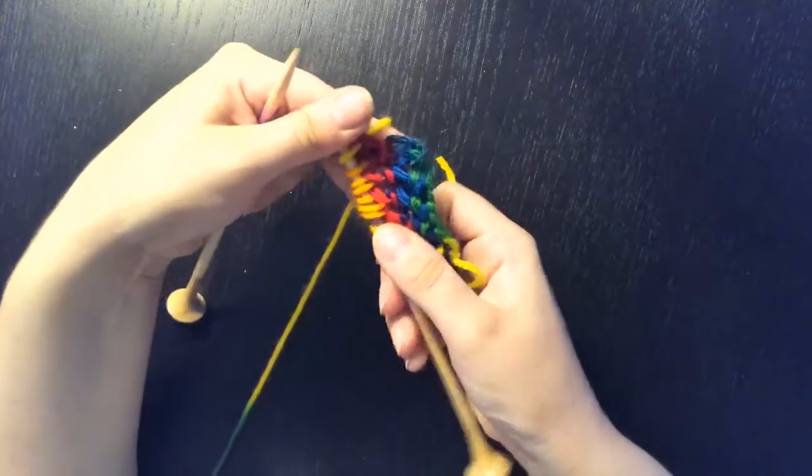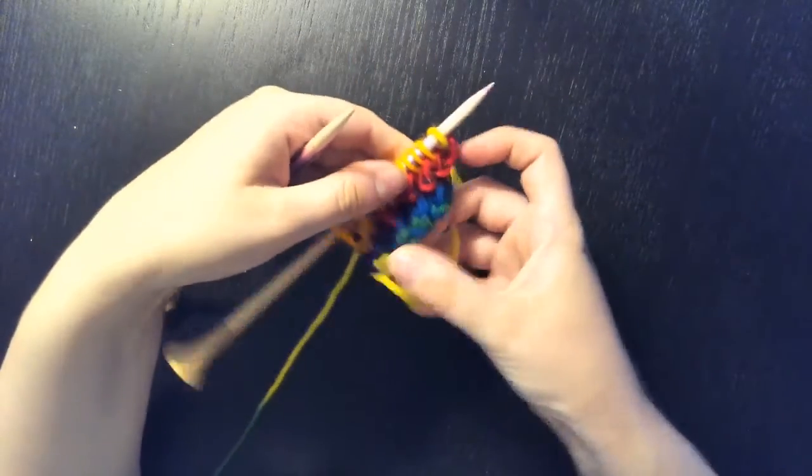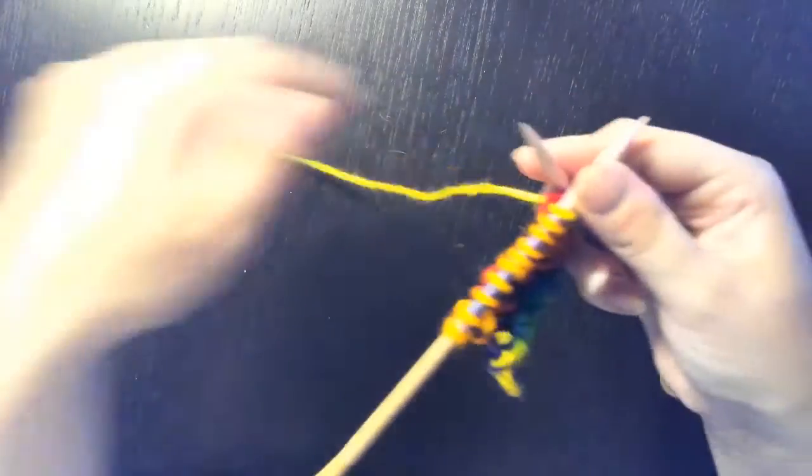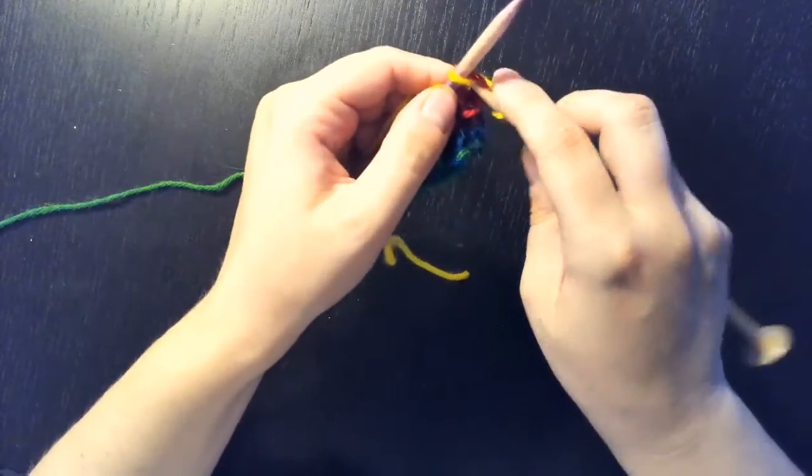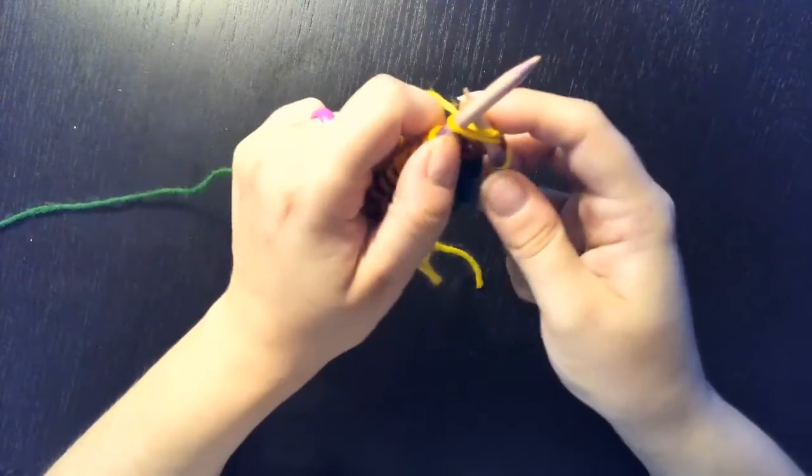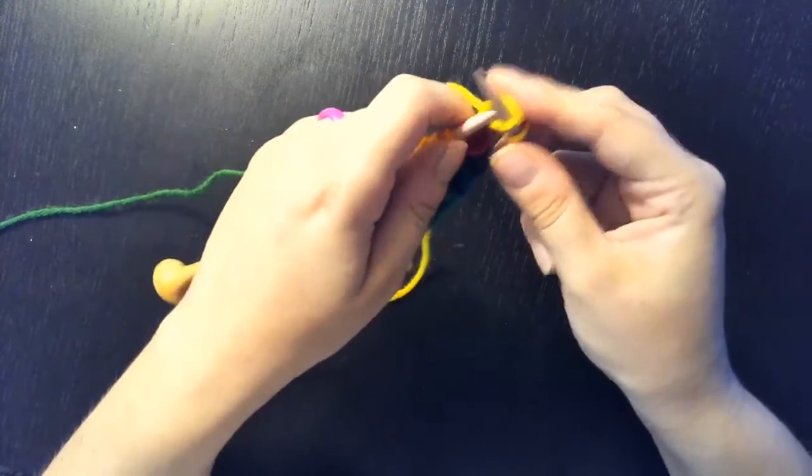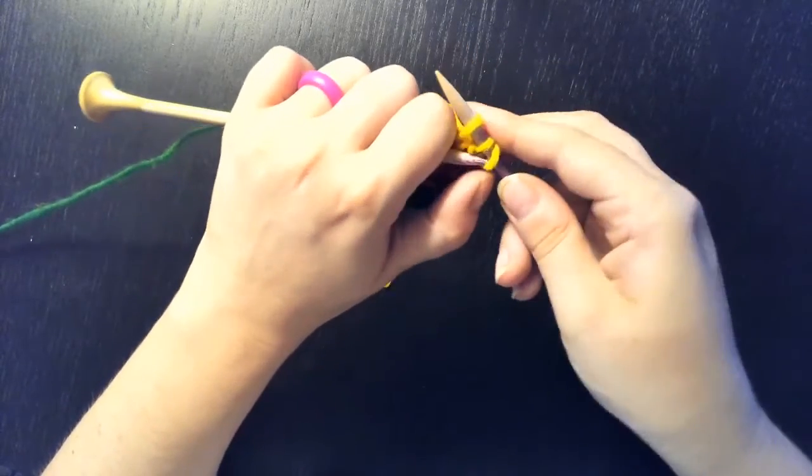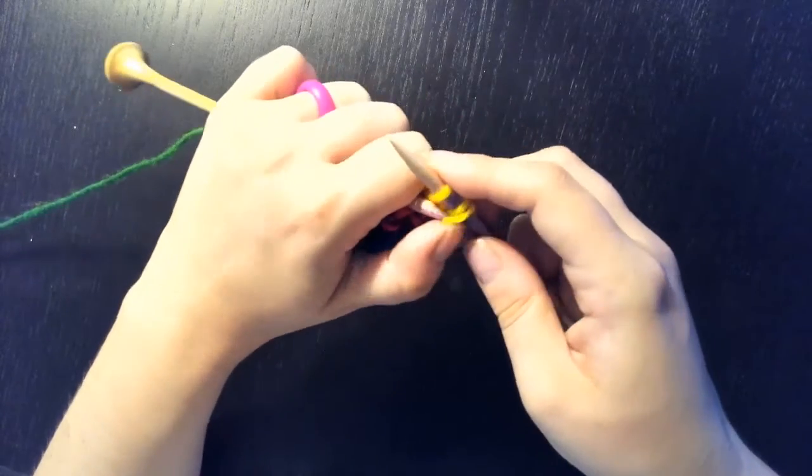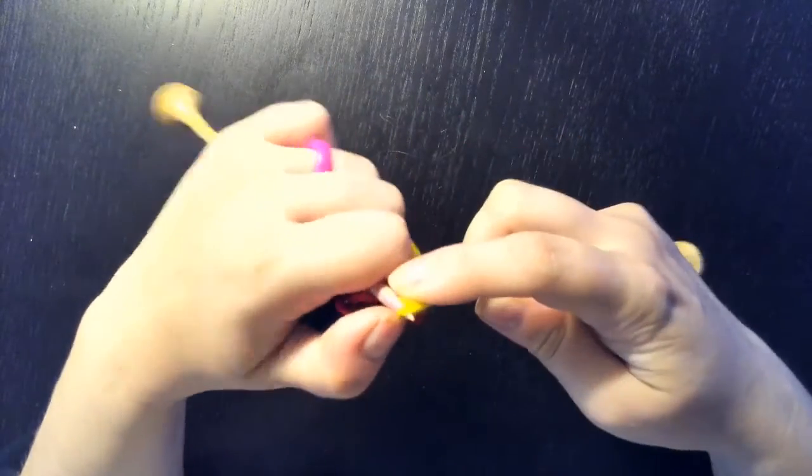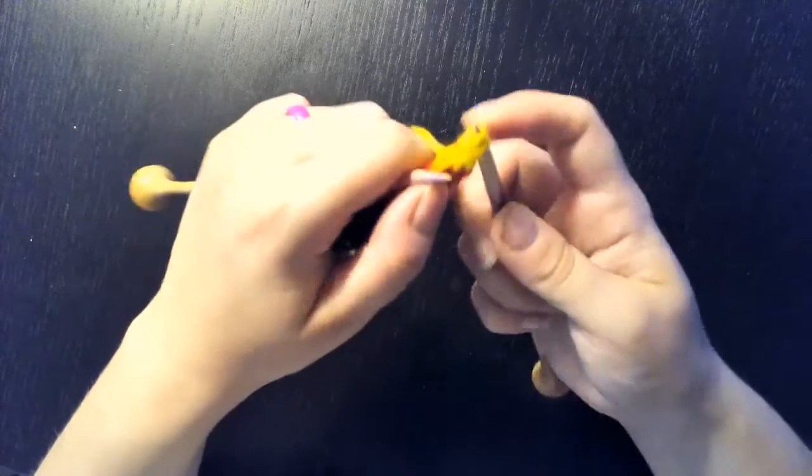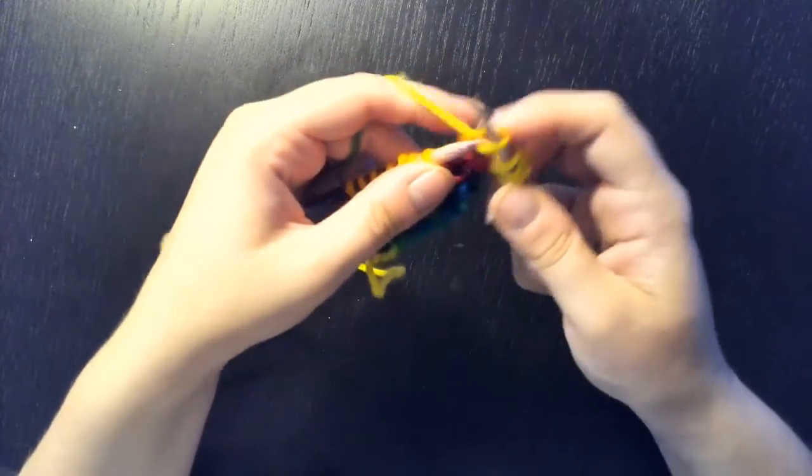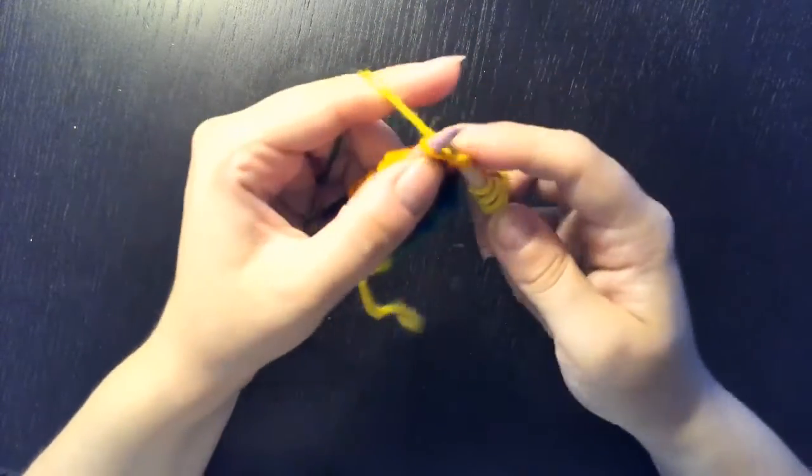This stitch is only a two row repeat. So we will go back to row one, where we yarn over, knit, and knit, and pull that yarn over the two knits on the right needle. Repeating that all the way across.